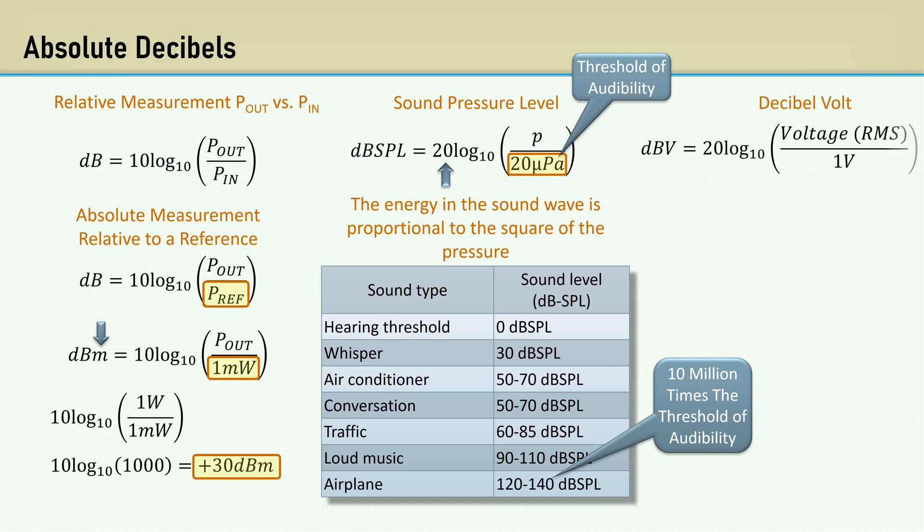Another application of an absolute decibel is the decibel volt. It has an uppercase V after the dB, and the reference is 1 volt. So 100 millivolts will be minus 20 dBV.